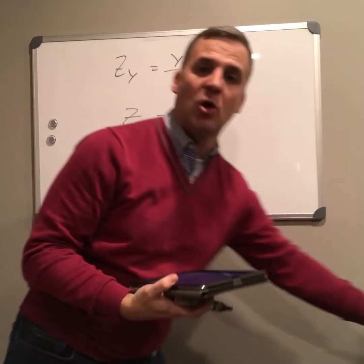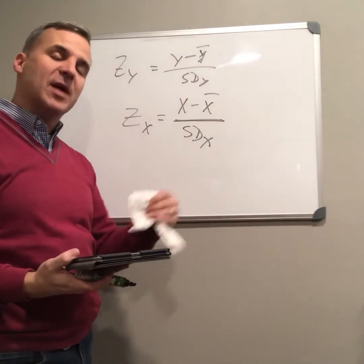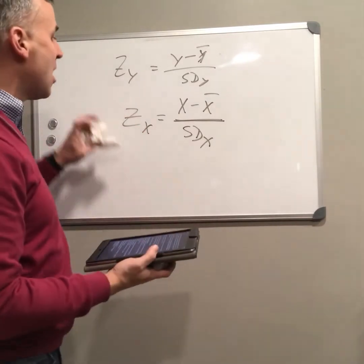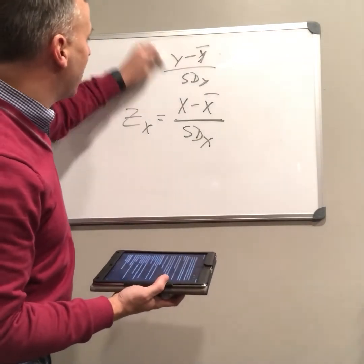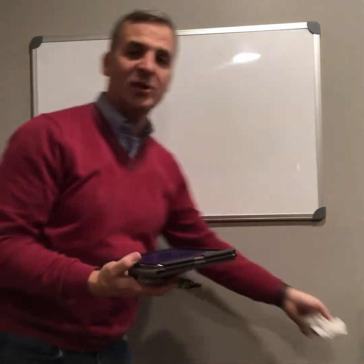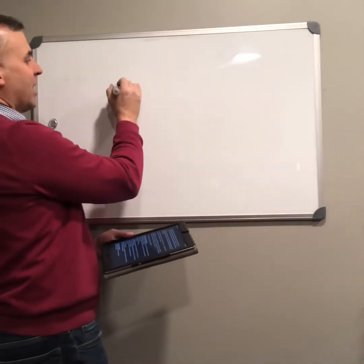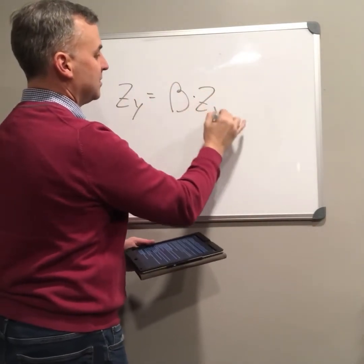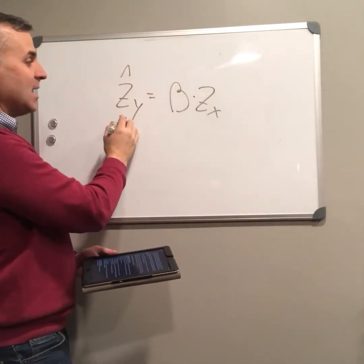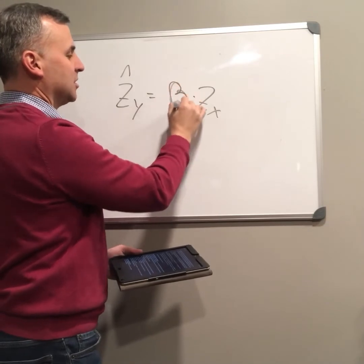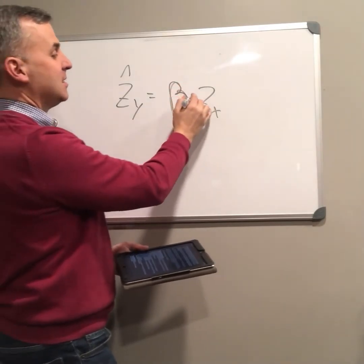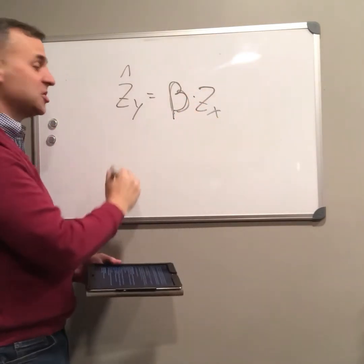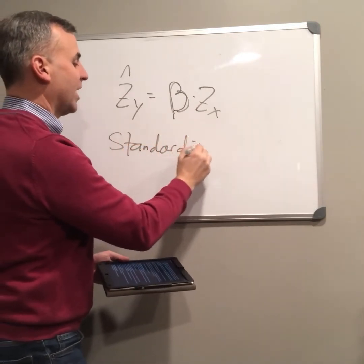If I standardize all my x's and all my y's, now they're on the same scale. I can compare them in a different way. If I do this for additional x's, they're on the same scale again. Now my interpretations are not based on my understanding of the scales of how I measured x and y. So we have a standardized regression equation: zy is equal to beta times zx. The expected z-score of y is equal to beta — the Greek letter beta — times the standardized z-score value of x. That's our standardized regression equation.